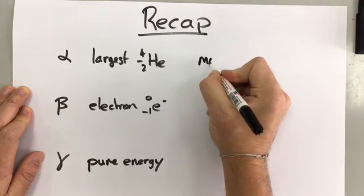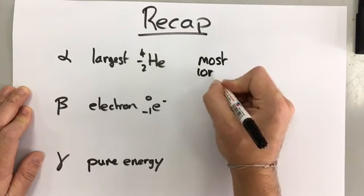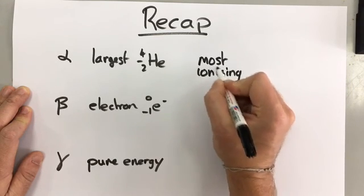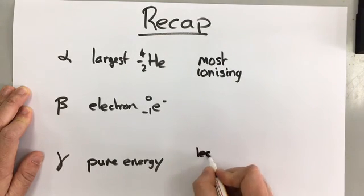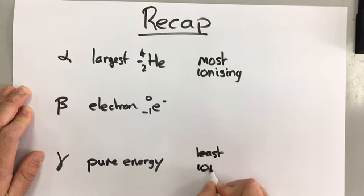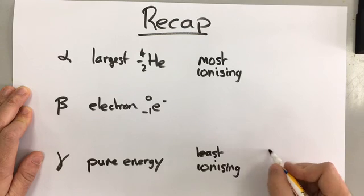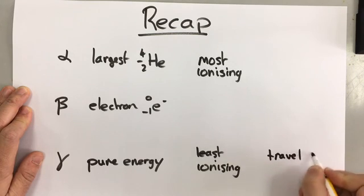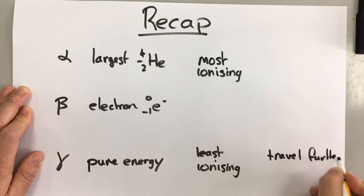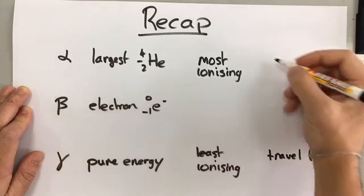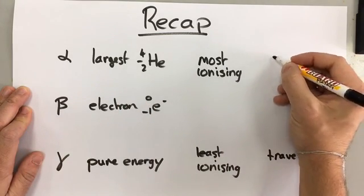Alpha particles are the most ionizing. Gamma rays are the least ionizing. But gamma rays can travel the furthest and alpha particles can hardly travel any distance at all.